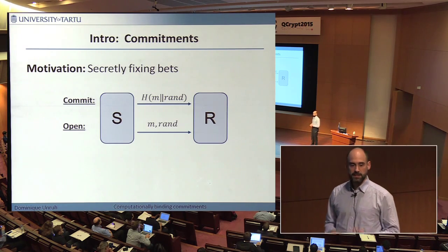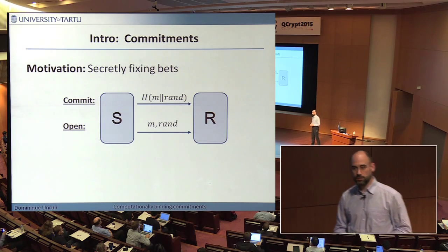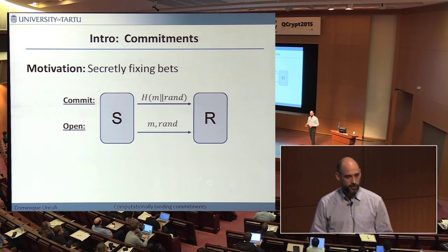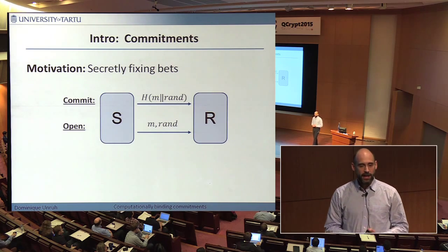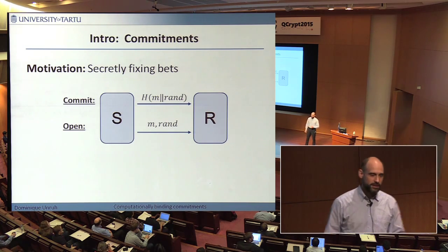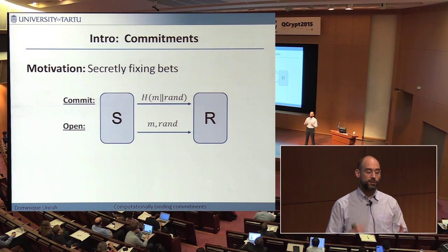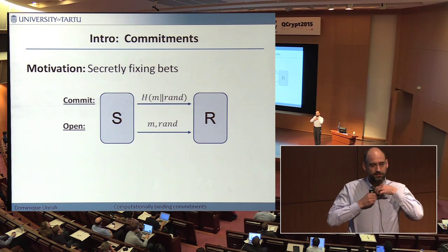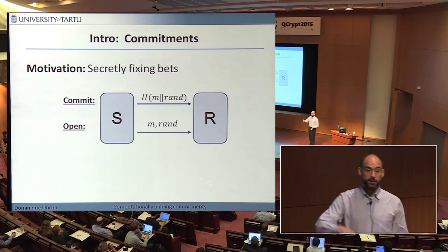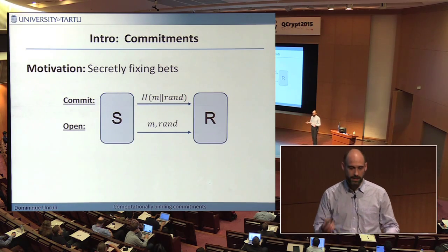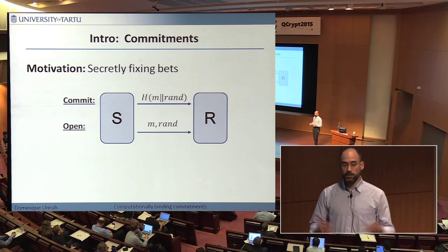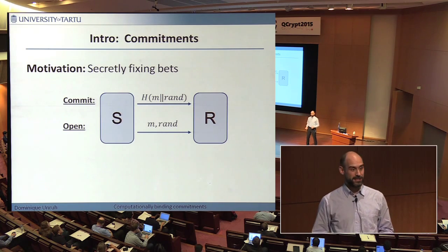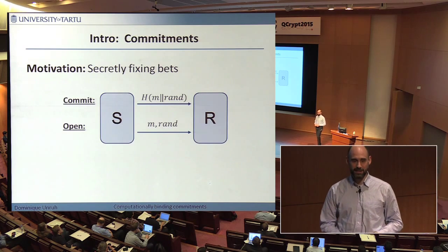For this, let's imagine a little toy application. I want to make a bet — I know which horse will win the horse race tomorrow and I want to bet a lot of money on it. But the problem is, if I just tell you which horse I think will win, you will bet on the same horse and this may lessen my winnings.